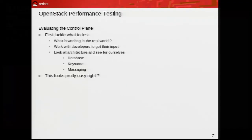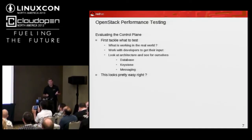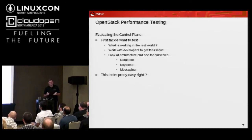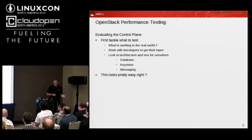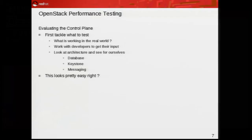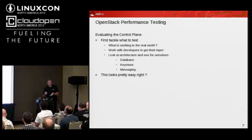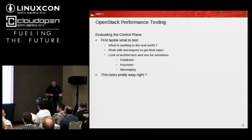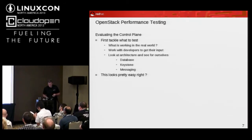First, tackling what to test: we go back and look at what's working in the real world. We see Swift is deployed everywhere, so we probably don't need to spend a lot of time on Swift outside of the Gluster integration. We try to focus on things that are Red Hat specific. For messaging, we use AMQP with QPID versus RabbitMQ — my team is very familiar with AMQP and QPID, and it's in heavy use in stock exchanges all over the world. We also work with developers to get their input on what they think the bottlenecks are going to be, and we look at the architecture with our own experience.